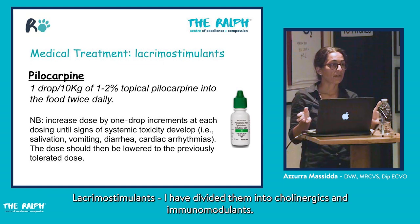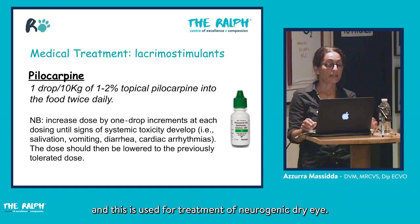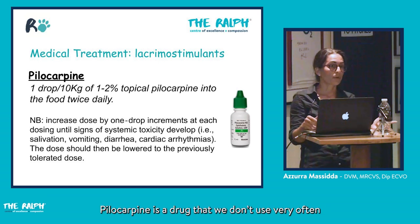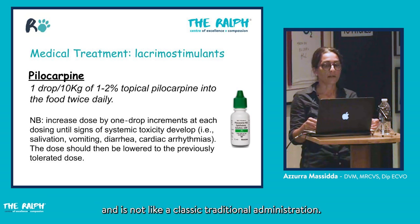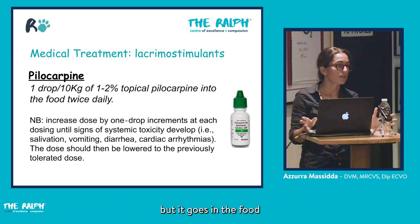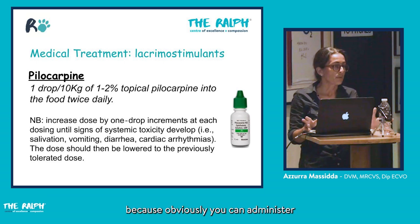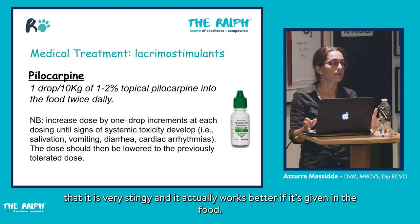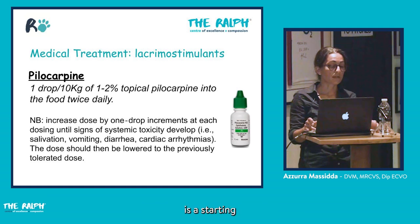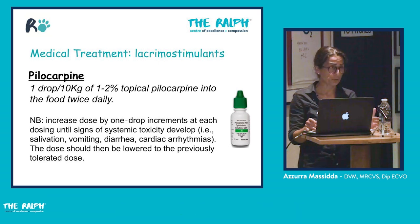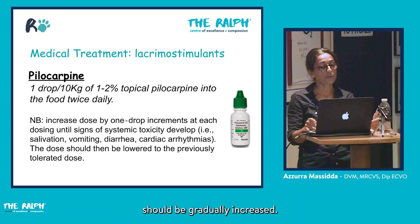Lacrimostimulants are divided into cholinergics and immunomodulants. Among the cholinergics, pilocarpine is mainly used for neurogenic dry eye. It comes as an ophthalmic solution but is administered in food because topical application is very stinging. The normal starting dose is one drop per 10 kg, administered twice daily, gradually increased.